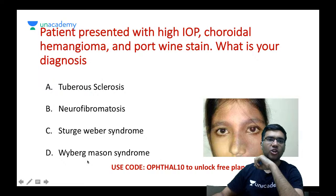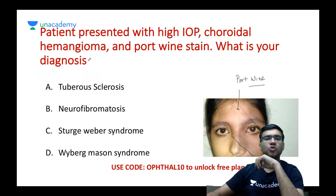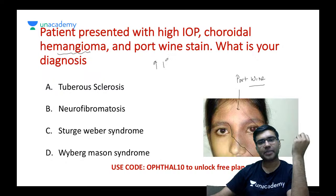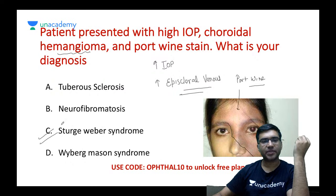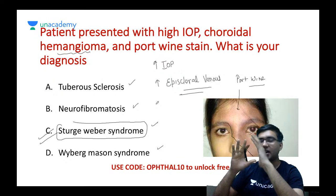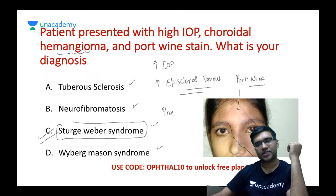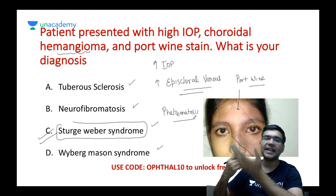A patient presents with high intraocular pressure, choroidal hemangioma, and port wine stain. You can see the port wine stain on the face. These patients also have choroidal hemangioma and increased intraocular pressure due to increased episcleral venous pressure. This patient is suffering from Sturge-Weber syndrome. Tuberous sclerosis, neurofibromatosis, Sturge-Weber syndrome, and Wyburn-Mason syndrome all come under a broad category of diseases called phacomatoses — having both ocular and systemic features.